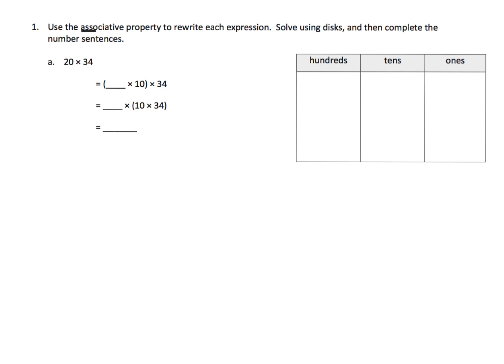So it says to use the associative property to rewrite each expression. This is totally different than what we did when we were students back in the day. So the idea is we're going to take a look at that 20, and 20 we can think of as 2 times 10. And now, using that 2 times 10, we can regroup, and we're going to get 2 times... Now we have 34 times 10.